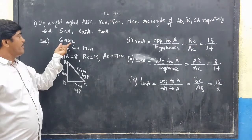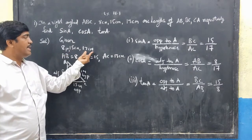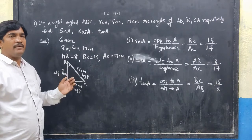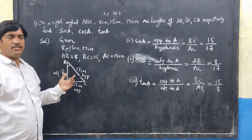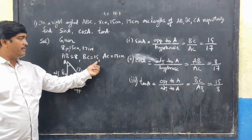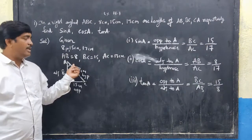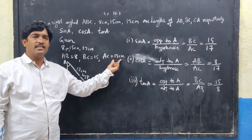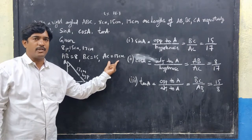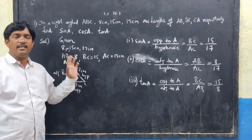For the solution, the given values are AB = 8 cm, BC = 15 cm and AC = 17 cm. Among these three values, 17 is the longest side, and the longest side is always considered as the hypotenuse. So 17 is the hypotenuse, and the other sides are the opposite and adjacent.